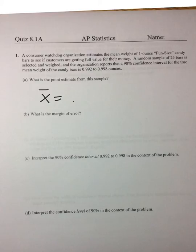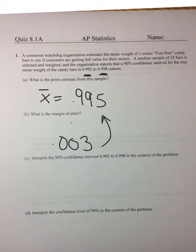So that would be the average weight for those 25 candy bars. What's next? What is the margin of error? In other words, what do we have to add to this average to get our confidence interval? Well, 0.995 plus 0.003 would get me to 0.998. So the margin of error must be 0.003. That's what we added to that to get this, or subtracted to get the other side.